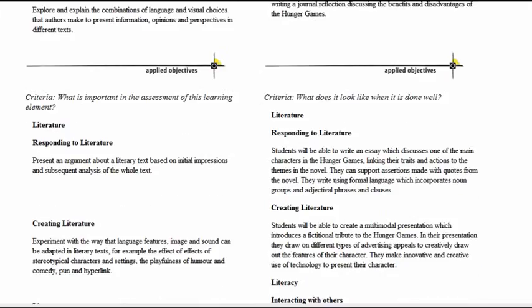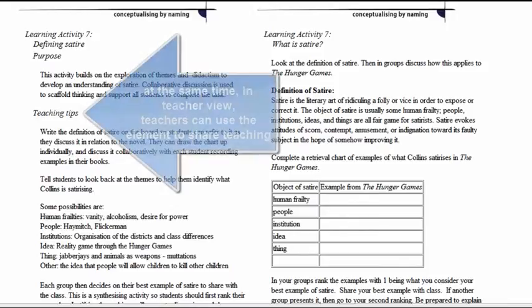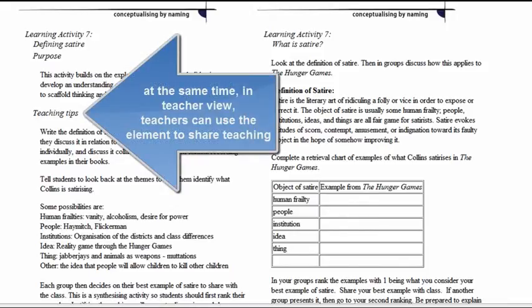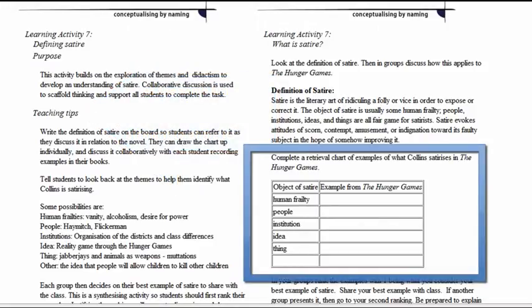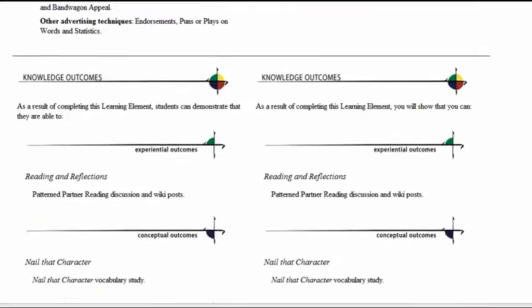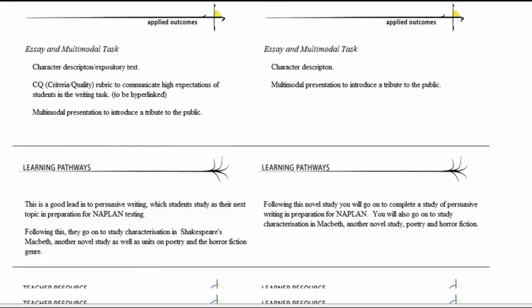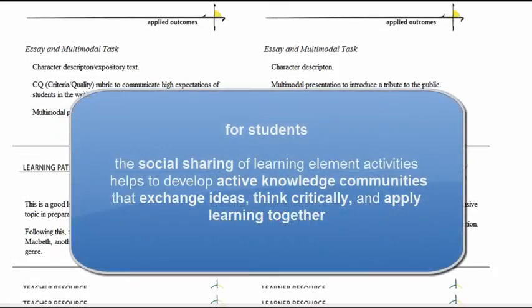Assignment objectives — conceptual, analytical — are shared with students. They know what they're supposed to be learning, and they can follow along carefully in the activities designed to enhance that learning. In Learning Activity 7, students are taught to think about different elements of satire that occur in the Hunger Games novel. In Learning Activity 12, they apply that knowledge to creating their own Hunger Games tribute, and they think about advertising strategies used to manipulate the public in such moments of public spectacle.